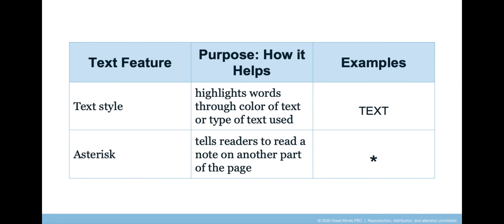Let's review the new text features we discussed today. We talked about the asterisk symbol today, and we also found examples of text style like a word in all capital letters. The author used these text features to draw attention to important words and phrases. These text features help readers understand people should not bother these animals or they will get hurt.